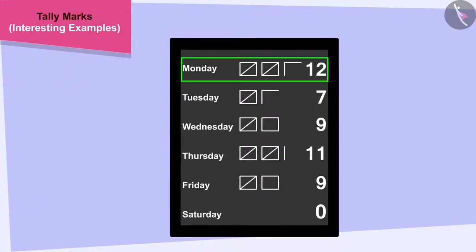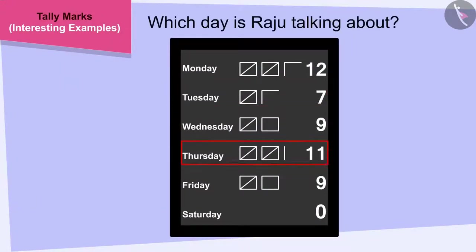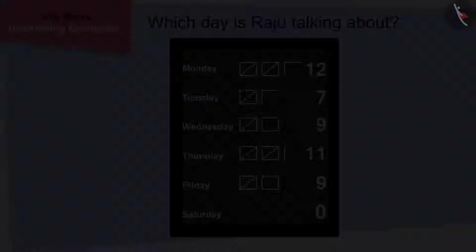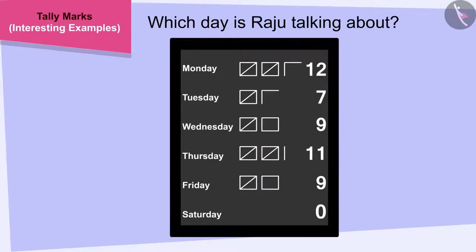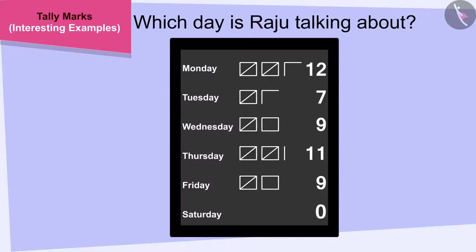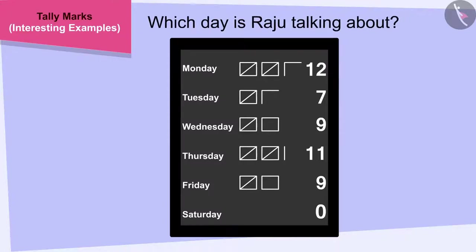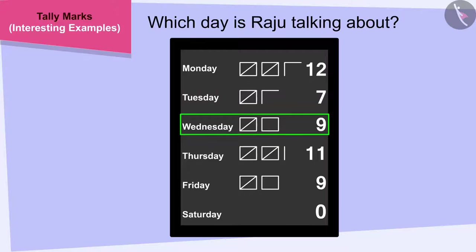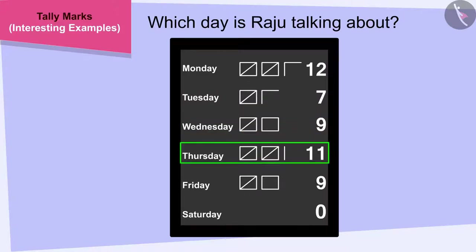Children, can you tell which day Raju is talking about? You may stop the video and find the answer. The villagers had to work together for 48 hours. Half of 48 is 24. Therefore, to find a solution to this question, we first have to find the total of the hours of work completed by the end of each day. Then, we have to find out by the end of which day more than 24 hours of work was completed.